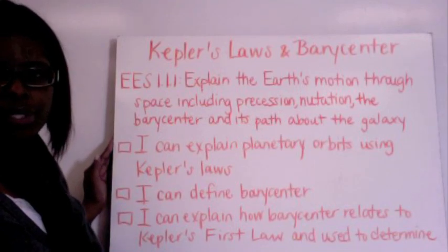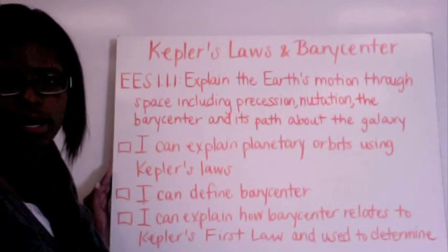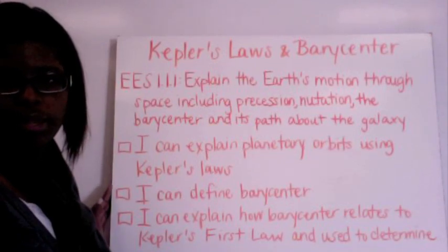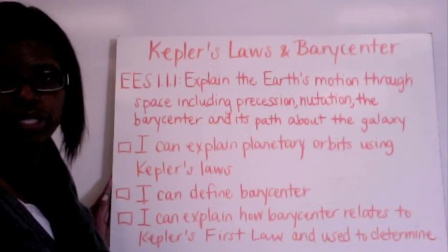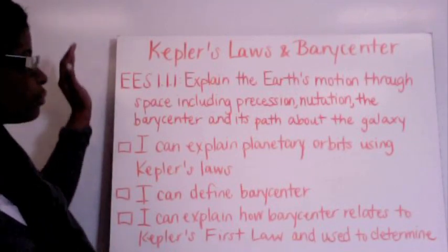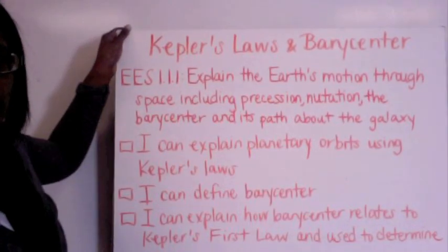You need to be able to explain the planetary orbits using Kepler's Laws, define a barycenter, and then explain how the barycenter relates to Kepler's first law and how is it used to determine stellar masses. So we'll come back to this to make sure that you can actually check off all these items.